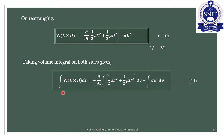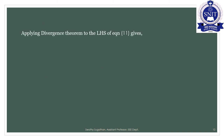The next step takes the volume integral of equation number 10 on both sides: ∫∫∫ del · (E cross H) dV = −∂/∂t ∫∫∫ (½εE² + ½μH²) dV − ∫∫∫ σE² dV. This is equation number 11.